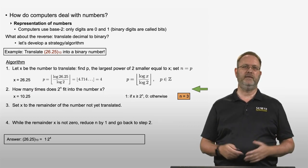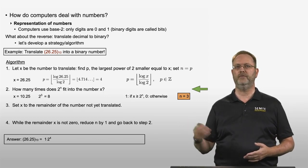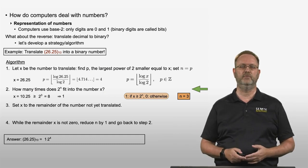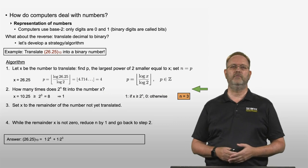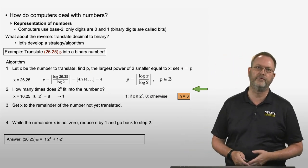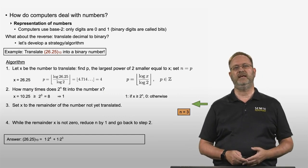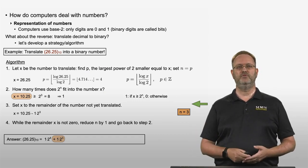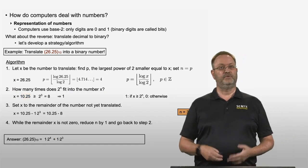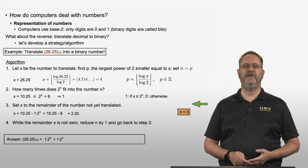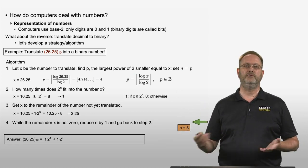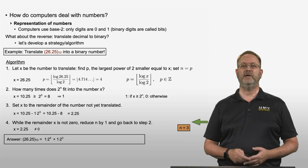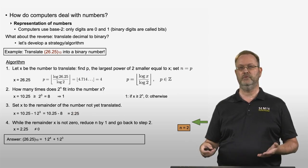Now we compare x, which is 10.25, to 2 to the power 3, which equals 8. Since 10.25 is greater than or equal to 8, the digit is 1. We add plus 1 times 2 to the power 3. Step 3: the remainder is 10.25 minus 8, which equals 2.25. That is not zero, so we reduce n from 3 to 2 and go back to step 2.